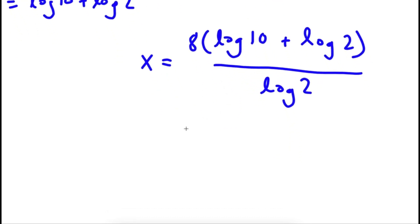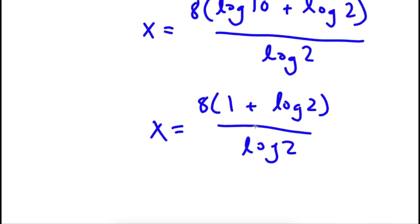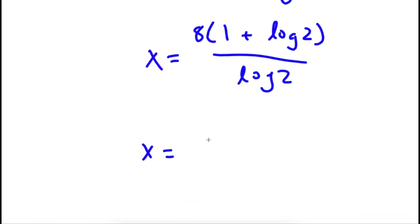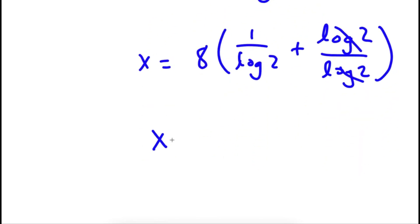Now log 10 is simply equal to 1. So now I have x is equal to 8 times (1 plus log 2) over log 2. This is the same thing as 8 times (1 over log 2 plus log 2 over log 2). And log 2 over log 2 — these two simply cancel out. So I'm left with x is equal to 8 times (1 over log 2 plus 1).